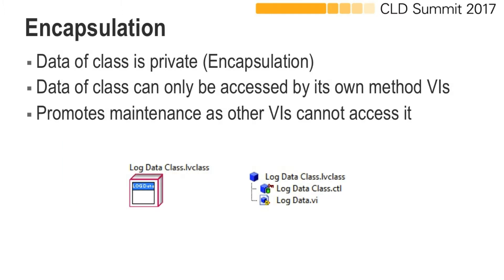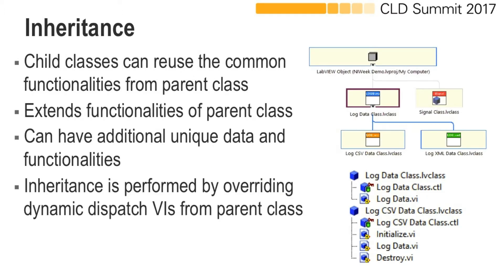When you write code using object-oriented programming you get benefits like encapsulation. Encapsulation allows the data to be private, meaning only the VIs belonging to that particular class can access that data — it promotes maintenance since other VIs outside the class cannot access it. Another feature of OOP is inheritance, where child classes can reuse common functionalities inherited from the parent class, and can also extend those functionalities with additional unique data and methods.